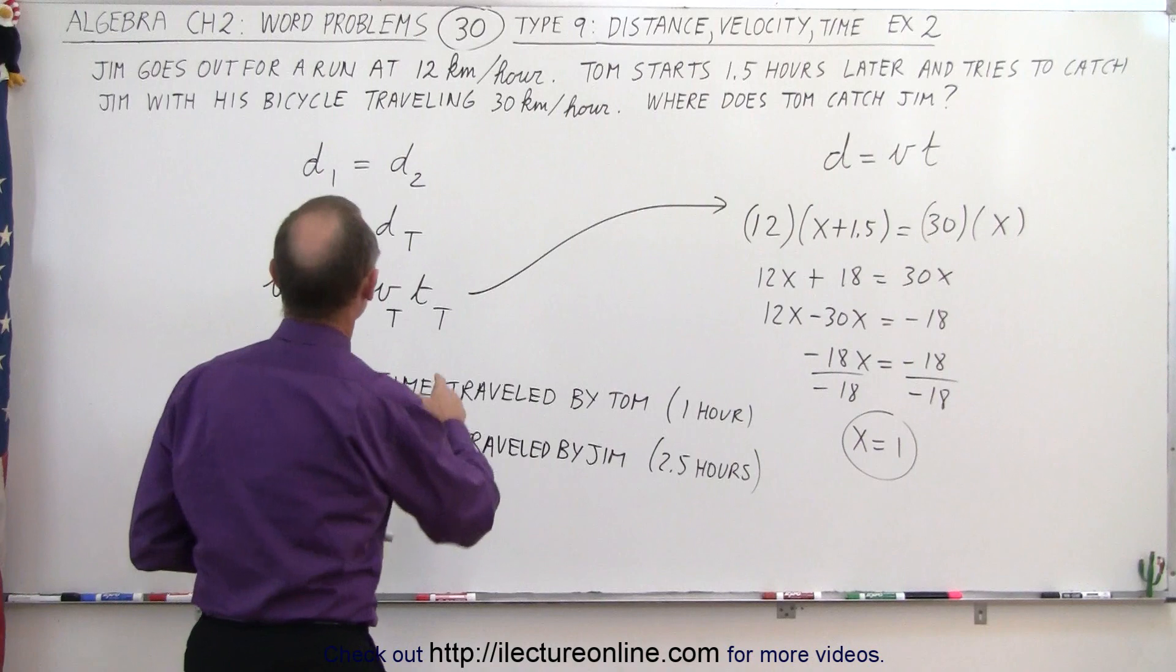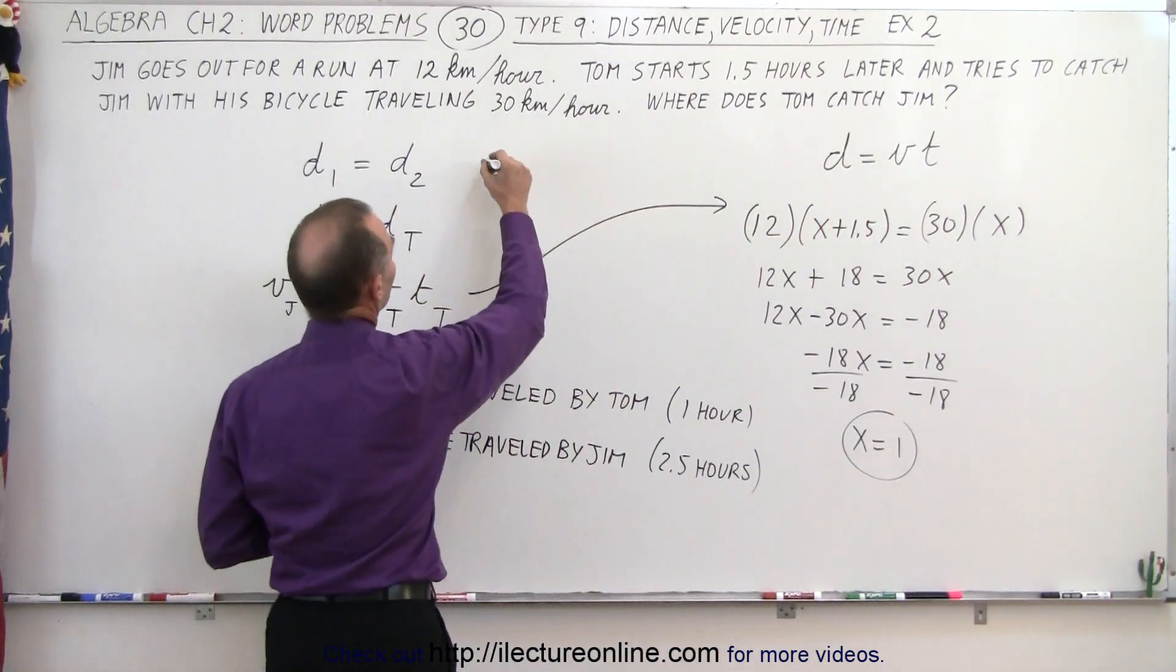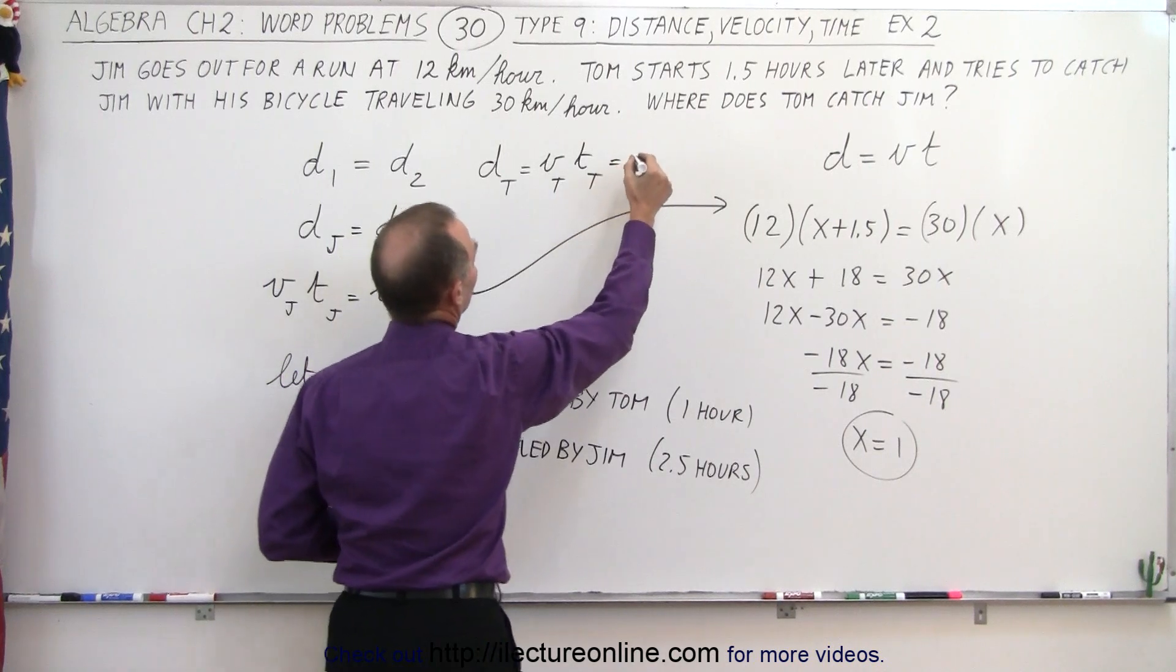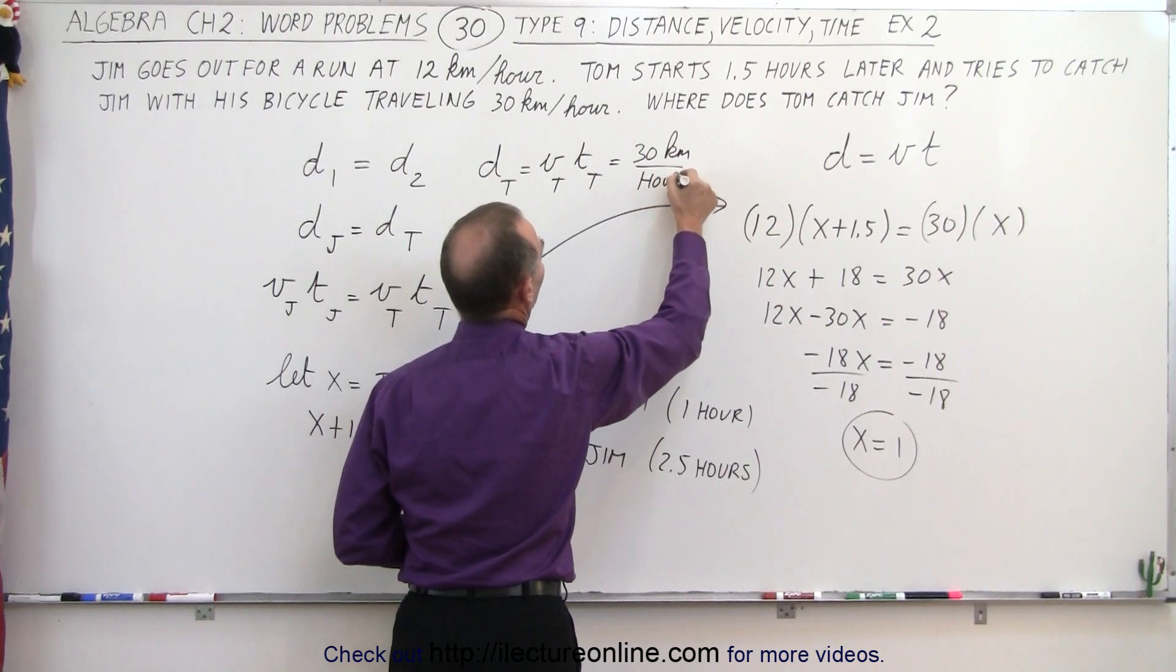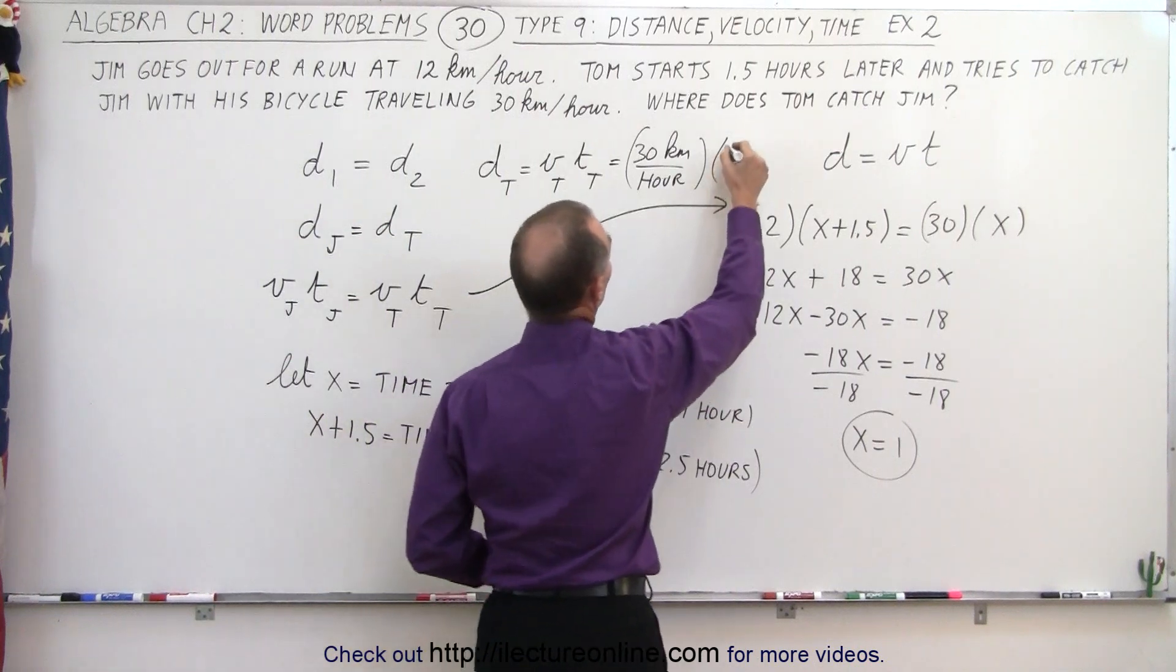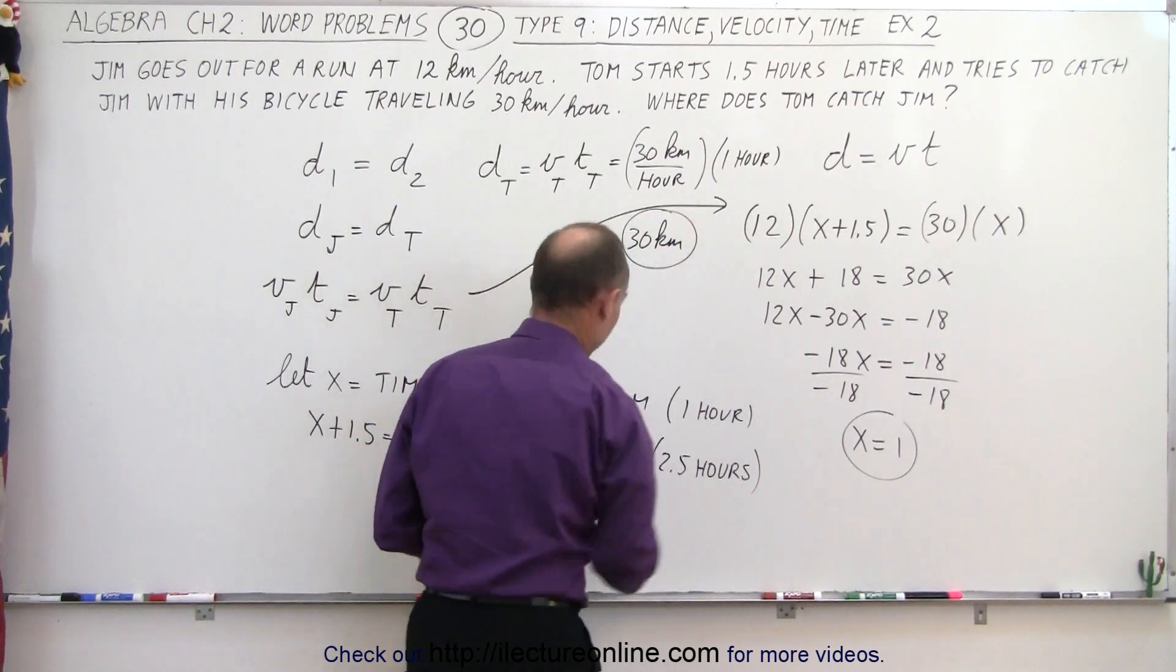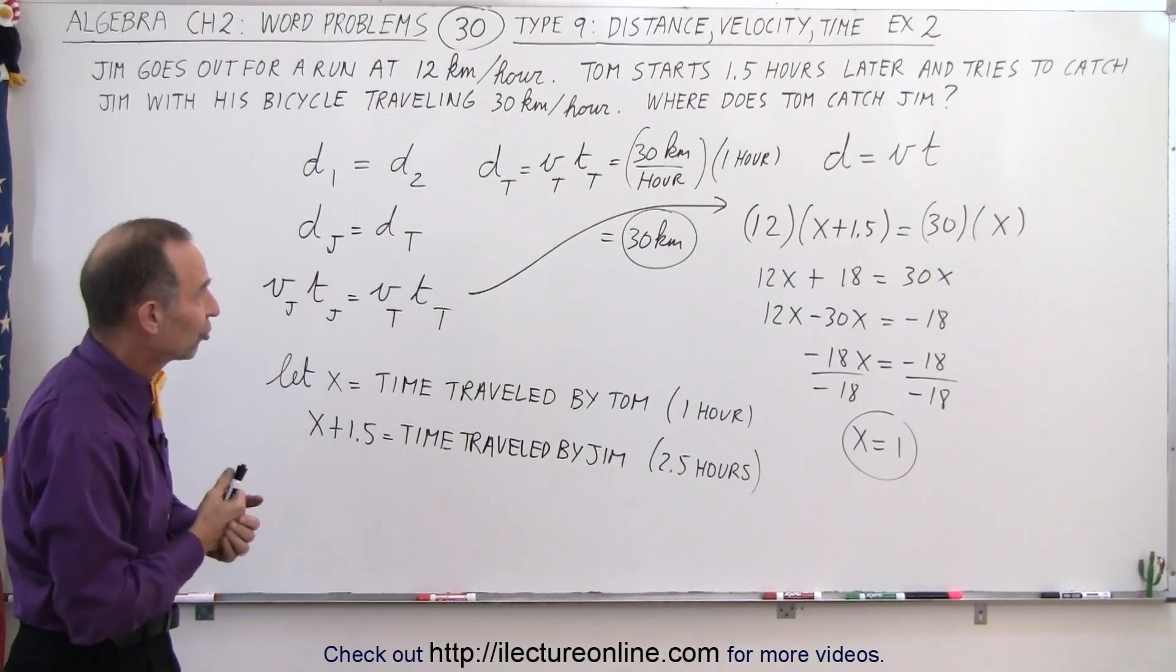Well, then we go back to the equation distance equals velocity times time. In this case, the distance traveled by Tom is equal to the velocity traveled by Tom times the time traveled by Tom. The velocity is 30 kilometers per hour, and the time traveled by Tom is 1 hour. And therefore, the distance traveled is 30 kilometers. So 30 kilometers away from the starting point, that's where Tom finally catches Jim.